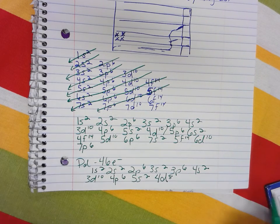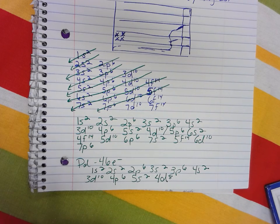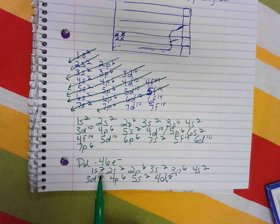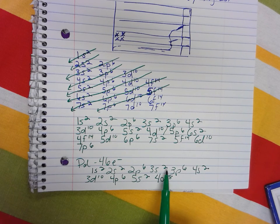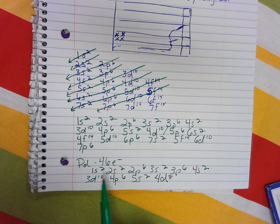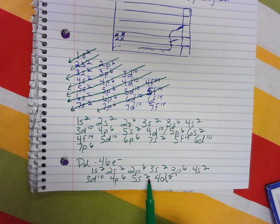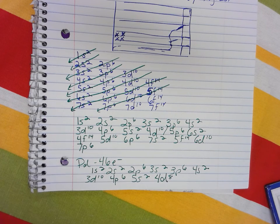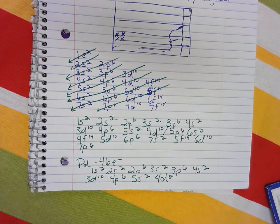So, I always want to double check my work here and make sure I have 46 electrons. So, 2, 4, 10, 12, 18, 20, 30, 36, 38, 46. This is the electron configuration for palladium.